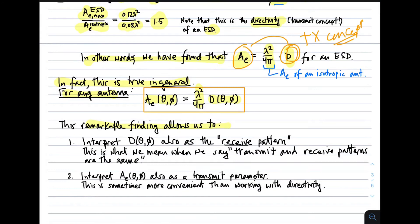This remarkable finding allows two powerful things: first, we can interpret the directivity and its associated pattern, defined in the transmit case, also as the receive pattern — this is what antenna engineers mean by reciprocity of transmit and receive patterns. Second, we can interpret effective aperture also as a transmit parameter. That concludes this lecture on effective aperture.